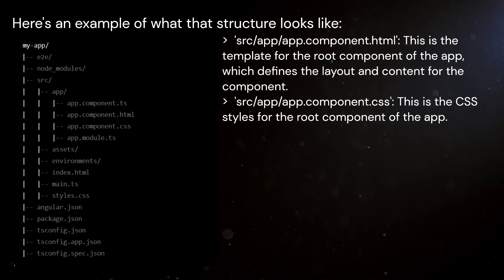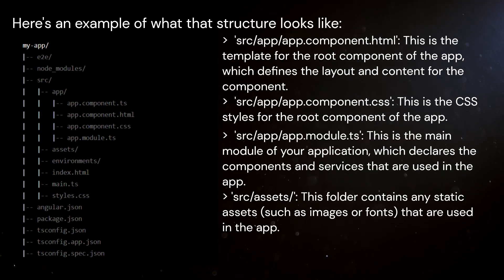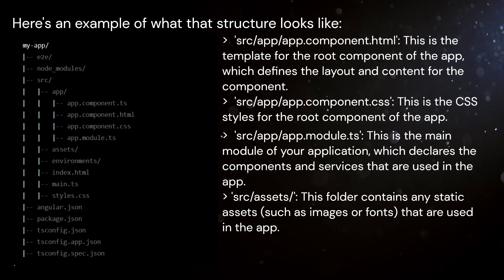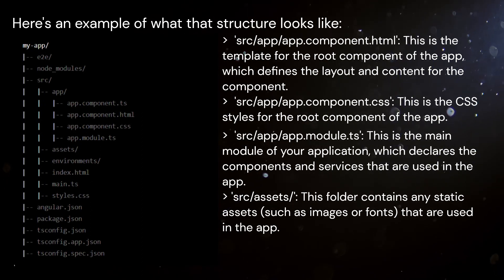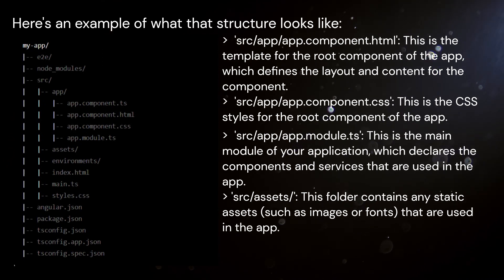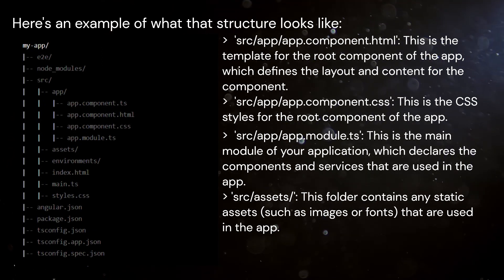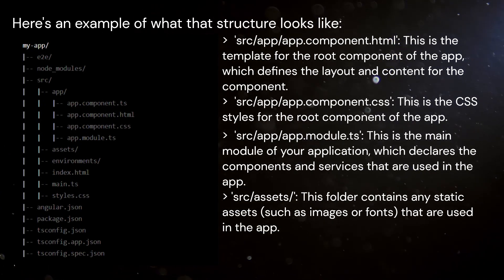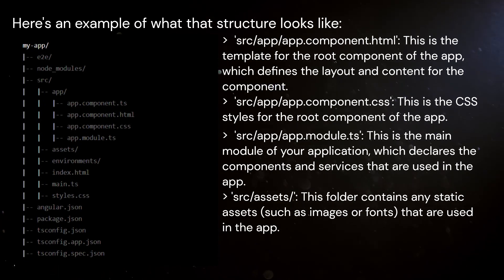SRC/App/app.component.css: This is the CSS styles for the root component of the app. SRC/App/app.module.ts: This is the main module of your application, which declares the components and services that are used in the app. SRC/Assets: This folder contains any static assets, such as images or fonts, that are used in the app.